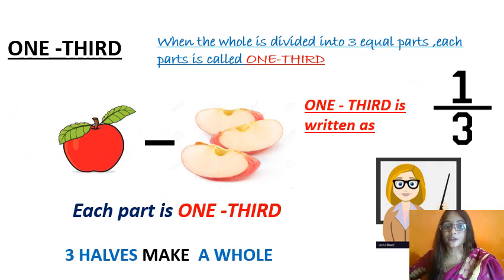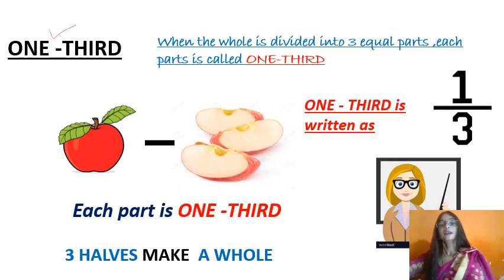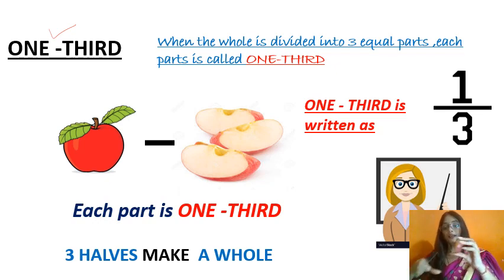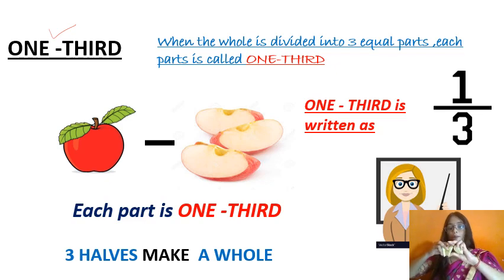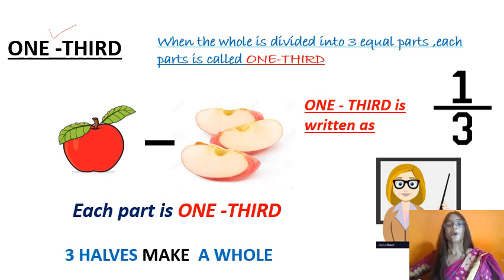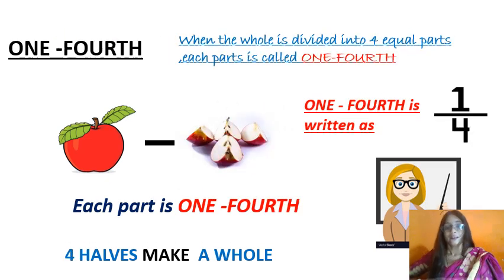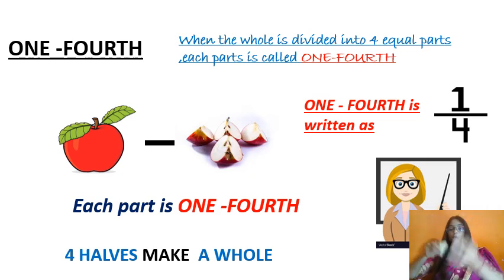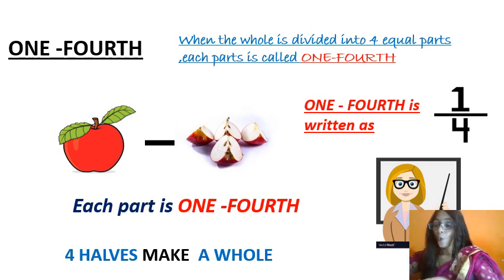Now we are going to learn what is one-third. When the whole is divided into three equal parts, each part is known as one-third. Like this apple — if I divide it into three parts, we have divided this apple into three parts, so each part is known as one-third. Now if we divide this whole apple into four equal parts — one, two, three, four — then each part is known as one-fourth. Understood? Well done!